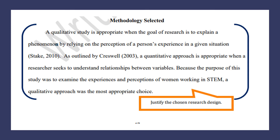For example, methodology is the justification. A qualitative study is appropriate when the goal of the researcher is to explain a phenomenon by relying on the perception and experience of a person in a given situation. As outlined, a quantitative approach is appropriate when a researcher seeks to understand the relationship between variables.